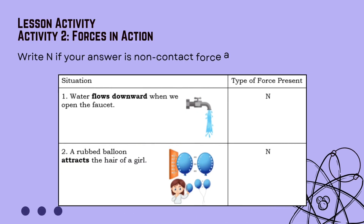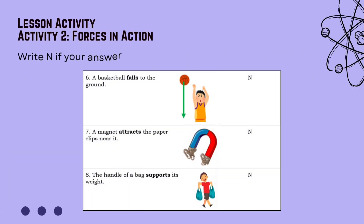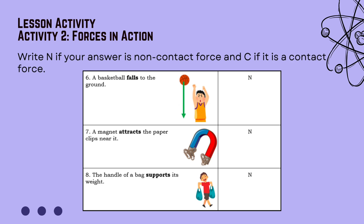Next activity: write 'non-contact force' or 'contact force' for each situation. Number 1 — water flows downward when we open the faucet: non-contact force. Number 2 — a rubbed balloon attracts the hair of a girl: non-contact force. Number 3 — a ball rolling on the ground slows down and stops: contact force. Number 4 — a boy throws a bottle into the recycling bin: contact force. Number 5 — a table supports the books: contact force. Number 6 — a basketball falls to the ground: non-contact force. Number 7 — a magnet attracts paper clips near it: non-contact force.